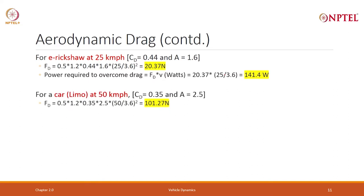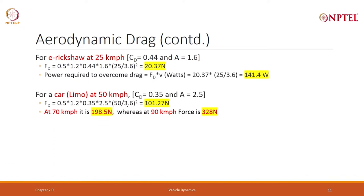For a car — a limousine at 50 km/h — the drag coefficient is 0.35 and area is 2.5 m². The force is 0.5 × 1.2 × 0.35 × 2.5 × (50/3.6)² = 101.27 Newton. At 70 km/h you multiply by (7/5)², which is about 49/25 — approximately double — giving roughly 200 Newton. At 90 km/h it further increases to 328 Newton. It shoots up; power keeps on increasing. Remember the power is a function of V cubed.